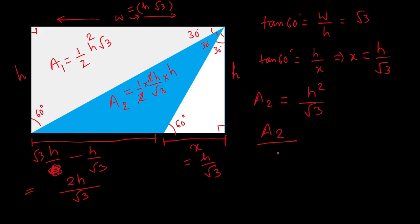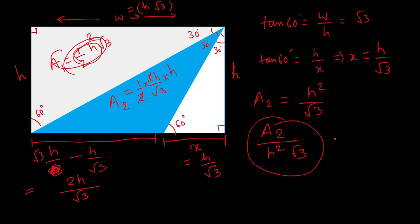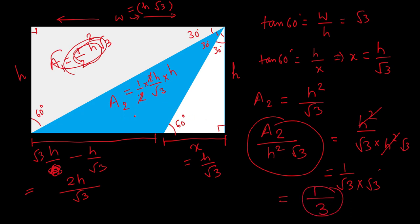We need to find a2 divided by the complete rectangle area. The complete area is h × w = h × h√3 = h²√3. So the ratio is (h²/√3) divided by (h²√3). The h² terms cancel, leaving 1/(√3 × √3) = 1/3. So the blue shaded region divided by the complete rectangle area equals 1/3.